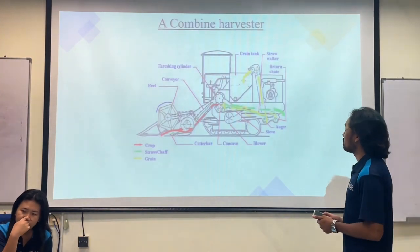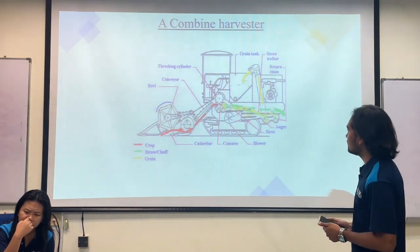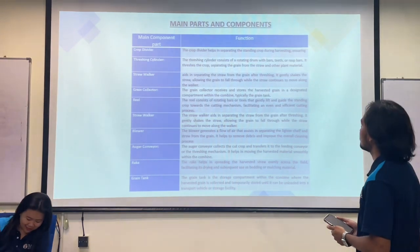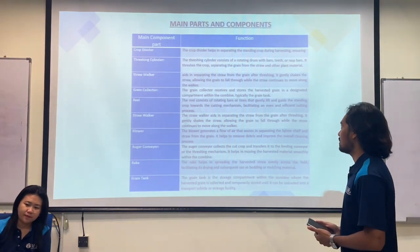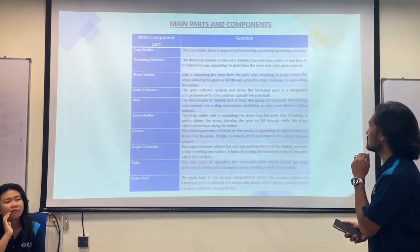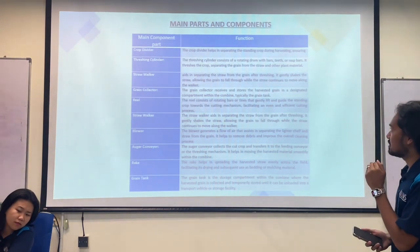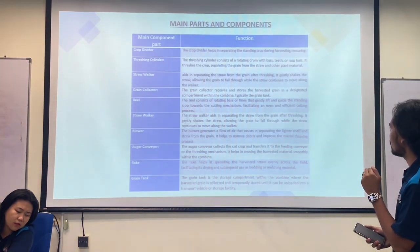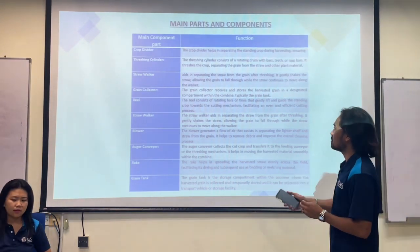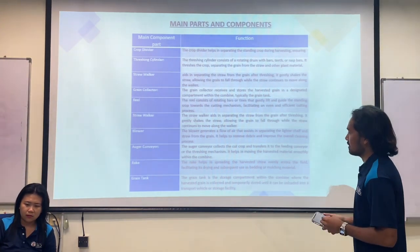These are the parts of the combine harvester. The first is the crop divider, whose function is to help in separating the standing crop during harvesting. Other parts include the dressing, which consists of a rotating drum with bars, teeth, and rib bars; the straw walker; grain collector; reel; blower; rack; and grain tank.